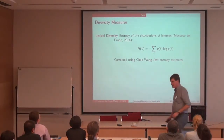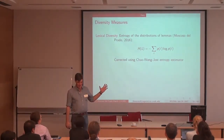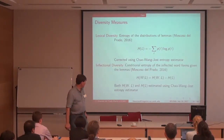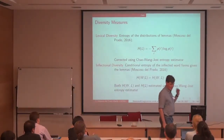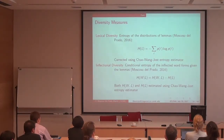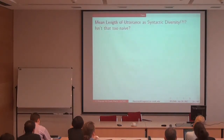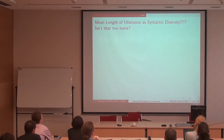For lexical diversity, I take the lemmatized corpus and compute an entropy using the Chao-Shen estimator. For inflectional diversity, I take the conditional entropy of the word forms given the lemmas — the unlemmatized forms given the lemmatized form — which is a measure of how much variability there is for each single lemma. I again decompose it into a joint entropy and a single entropy, and estimate those separately using the Chao-Shen estimator.